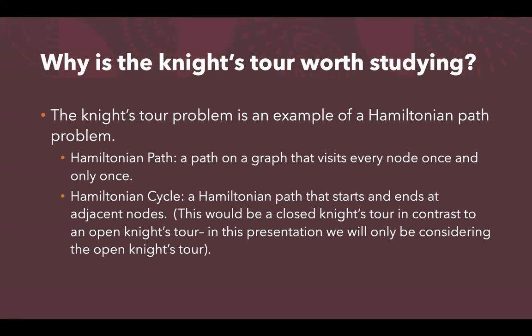A Hamiltonian cycle is a special type of Hamiltonian path that starts and ends at adjacent nodes. The knight's tour problem is looking for a Hamiltonian path. A Hamiltonian cycle in the knight's tour would mean the last position the knight ended on is only one move away from the start position — this is called a closed knight's tour. In contrast, an open knight's tour means you've covered each square once but the ending spot is not one step away from the start. For this presentation, we'll only be considering the open knight's tour.